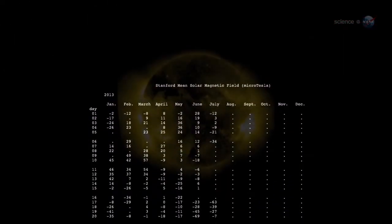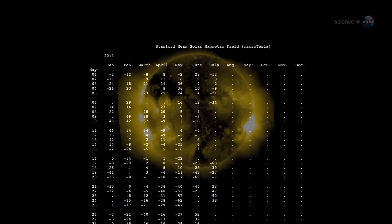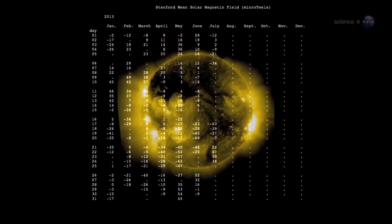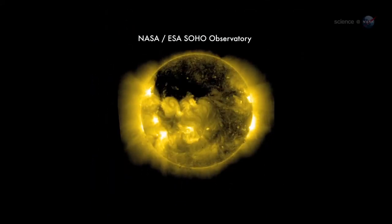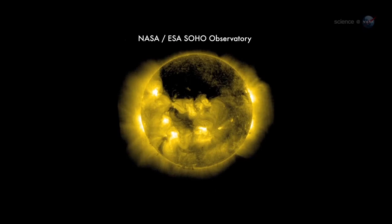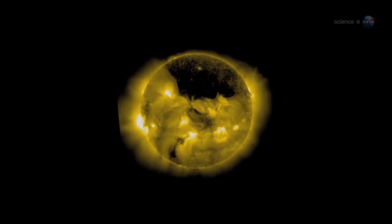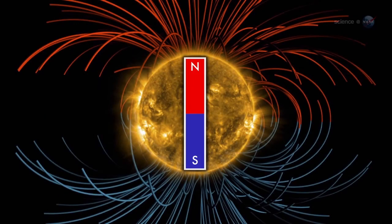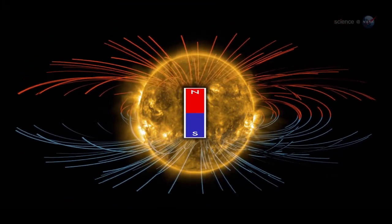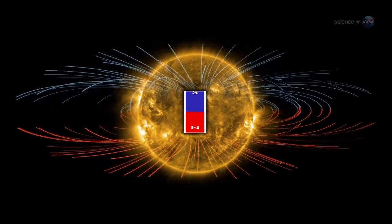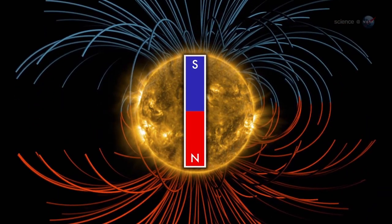As the field reversal approaches, data from Wilcox show that the Sun's two hemispheres are oddly out of sync. The Sun's North Pole has already changed sign, while the South Pole is racing to catch up, says Shearer. Soon, however, both poles will be reversed, and the second half of SolarMax will be underway. When that happens, Haksema and Shearer will share the news with their colleagues and the public.